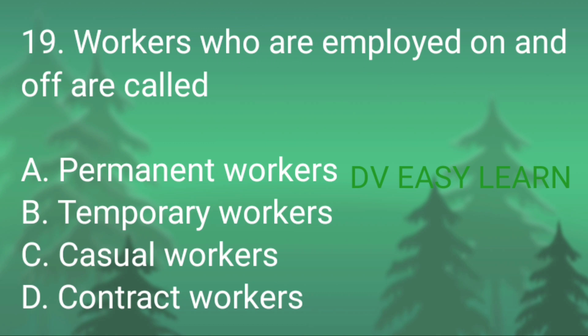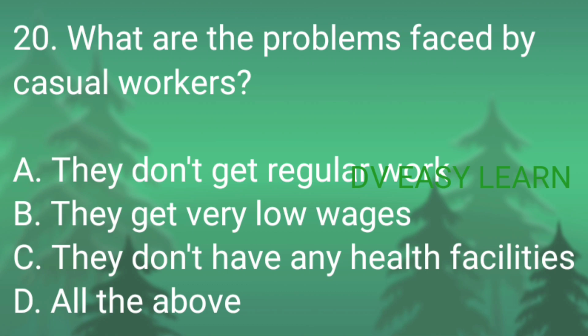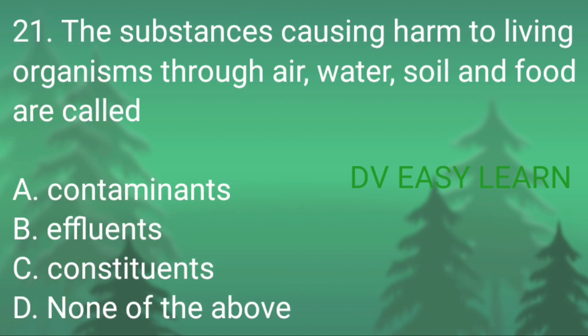Question number 19: workers who are employed on and off are called — correct answer: casual workers. Question number 20: what are the problems faced by casual workers — correct answer: all the above — they don't get regular work, they get very low wages, they don't have any health facilities.